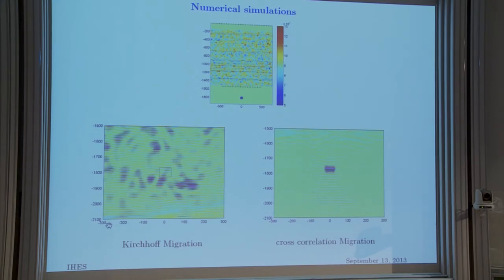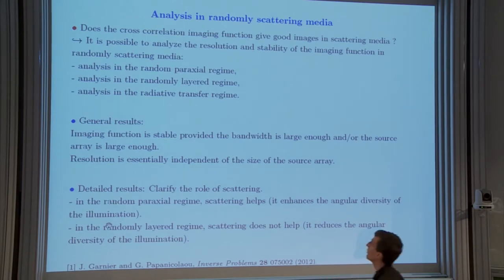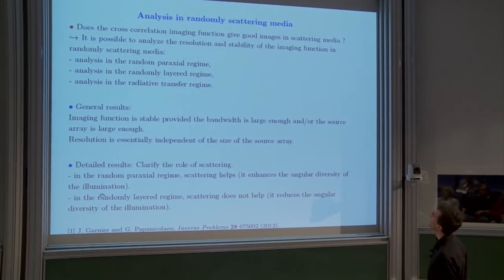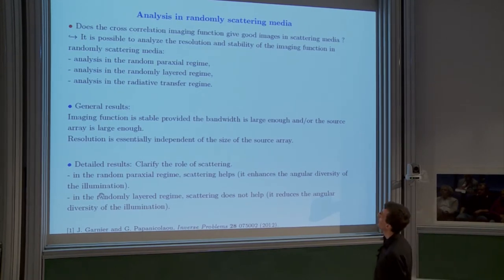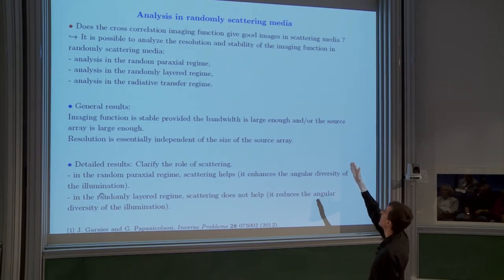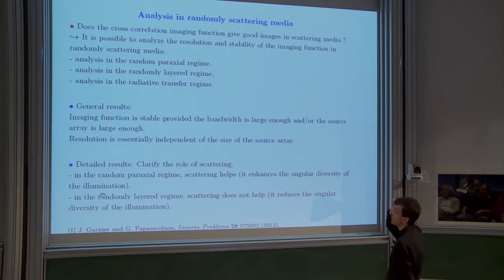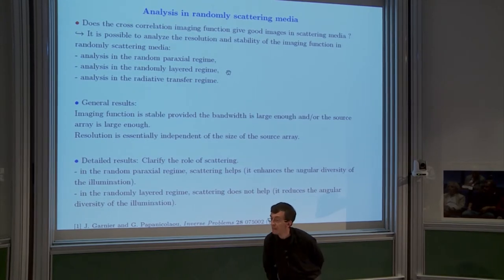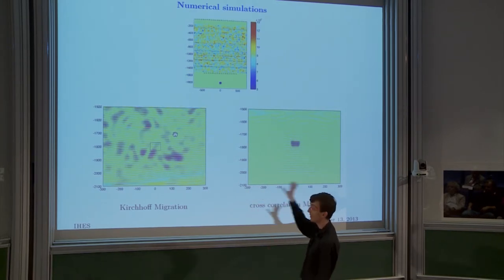This is not image processing. There is no way to go from the garbage image to the clear image by post-processing. You have to go back to the data and process it in a completely different way — adopt a new point of view on how to build images from this kind of data. The same data is used on both sides; the cross-correlation approach requires more averaging but seismic imaging provides plenty of data and time since the medium doesn't move.